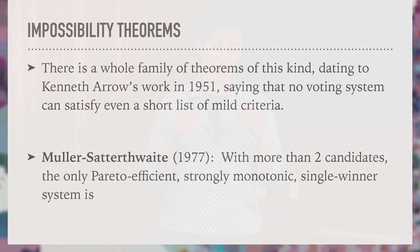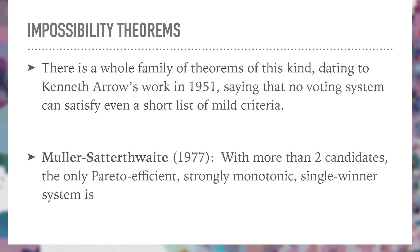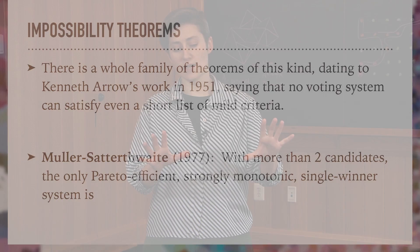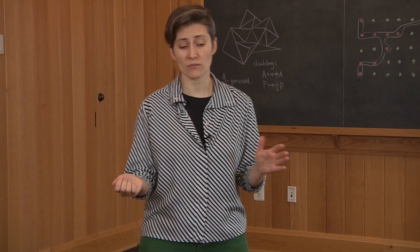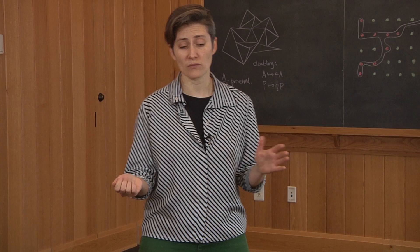Once you have those, you can state theorems, and sometimes the theorems are pretty striking. Let me give you one example of a really classic impossibility theorem about voting systems. This one comes from the 70s by Muller and Satterthwaite. What it says is that if I consider systems which have at least three candidates, need to produce a single winner, are Pareto efficient, and are strongly monotonic—meaning if everyone changes their preferences in a way that's favorable or neutral to candidate X, the effect shouldn't be to hurt candidate X—then any such system has to be a dictatorship. Every other system is going to violate one of those requirements.